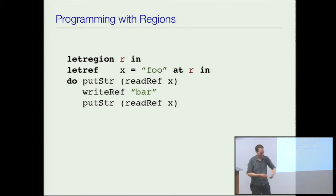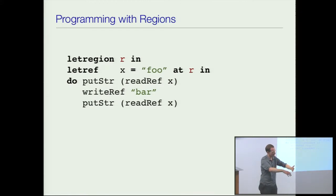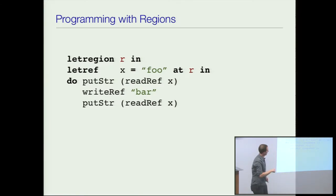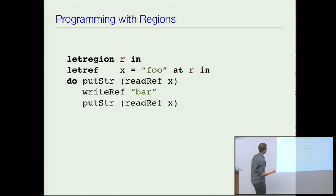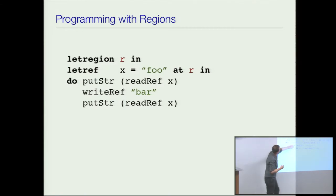There are two reasons you might use regions. First, if you have objects in different sections, you can prove in the type system that if you're writing to two objects in one region, it doesn't affect operations on the other region. The second reason is it helps managing allocation, which we'll talk about in a sec. So we have these two extra forms: 'let region', and then an extended 'let ref' form which says which region you're going to put the reference into.